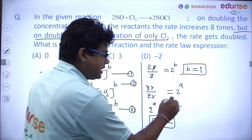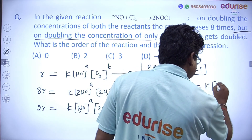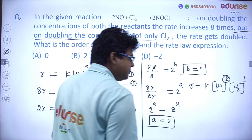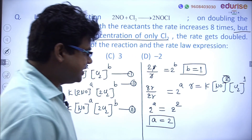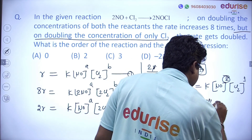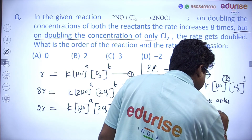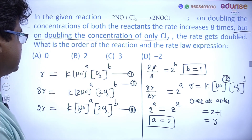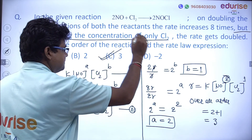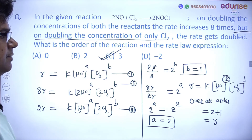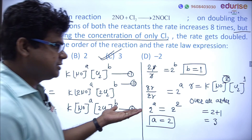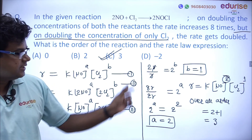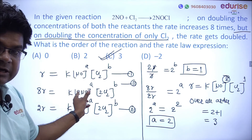Rate law expression: rate = k[NO]²[Cl₂]¹, where 2 is the order with respect to NO and 1 is the order with respect to Cl₂. Overall order = 2 + 1 = 3. This is the rate law equation. One of the best questions.